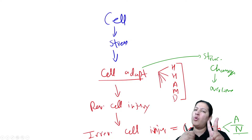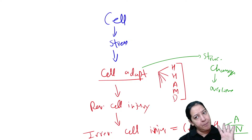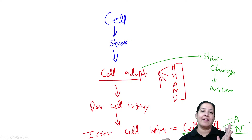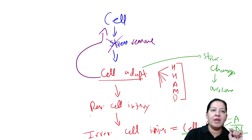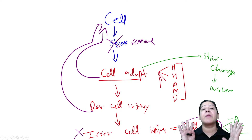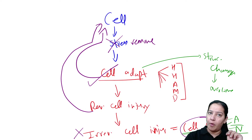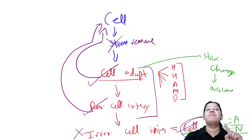Cell death is irreversible — once it occurs, you cannot make the cell alive again. There is a 'point of no return': before this point, removal of stress allows the cell to recover; after it, the cell is destined to die. I will explain apoptosis and necrosis tomorrow. Today I will explain the first two: cell adaptation and reversible cell injury.